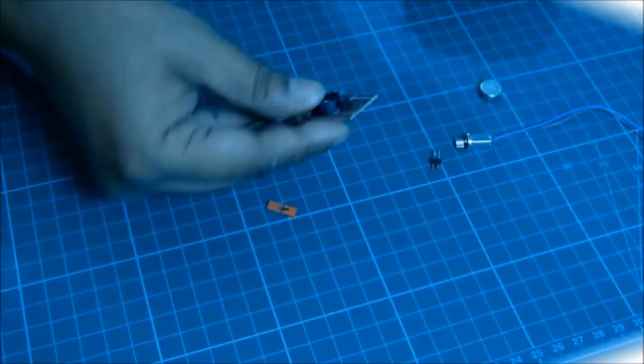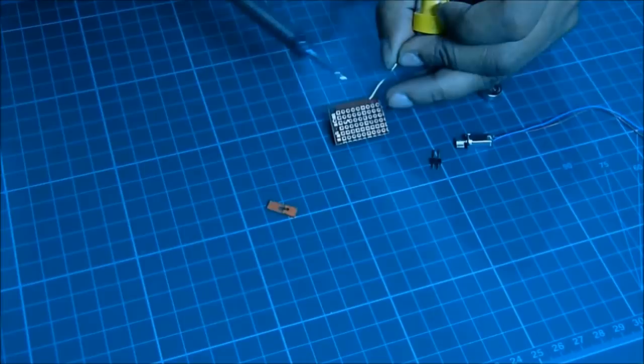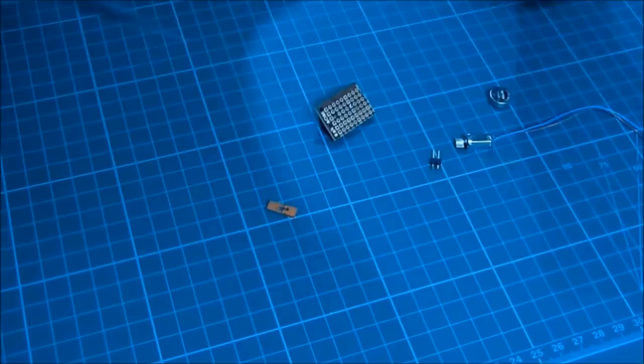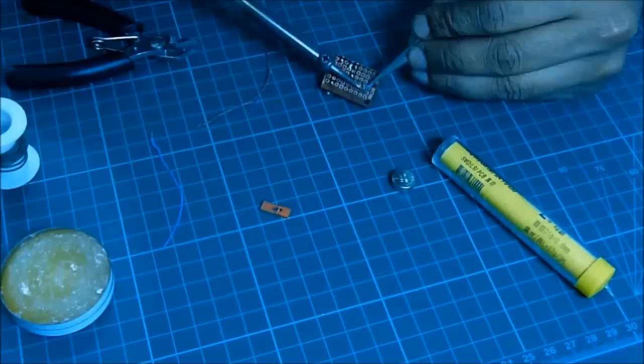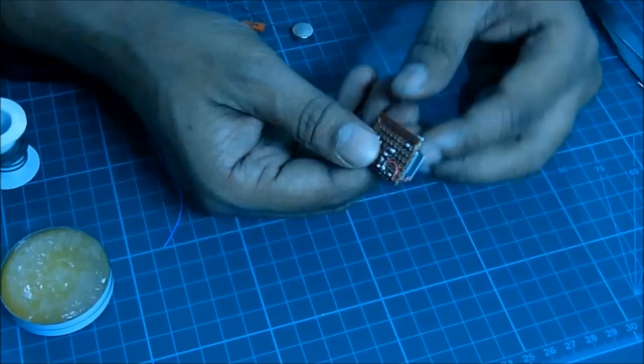We are going to solder that in this PCB. We first solder the holder, the battery holder, then we'll solder the vibration motor, then we'll connect the wires in series with the battery and the jumper.